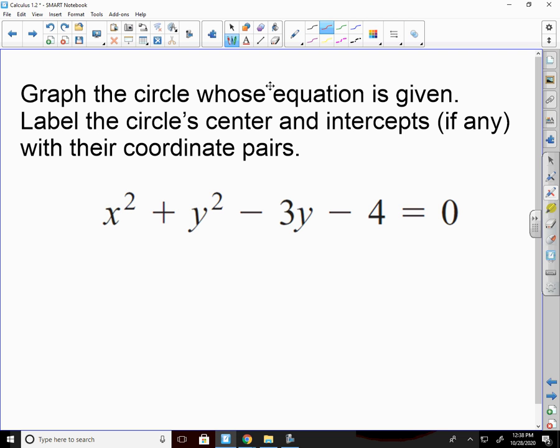Graph the circle whose equation is given. Label the circle's center and intercepts, if any, with their coordinate pairs. The first thing that I notice is, if I go to pair my X's and Y's together, I only have an X squared. That's sad. All by itself. Let's start singing here, but I'm going to let it go. Let's pair the Y's together. Y squared minus 3Y. And what would I do with this negative 4? Yeah, let's add it over to the other side. So that's equal to 4.